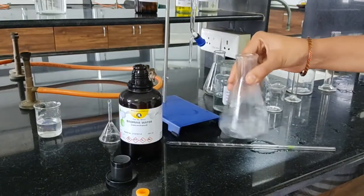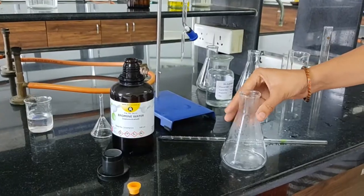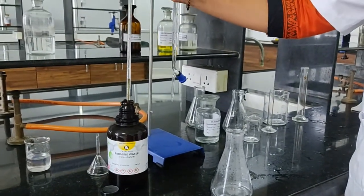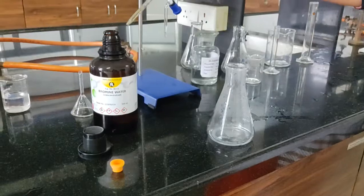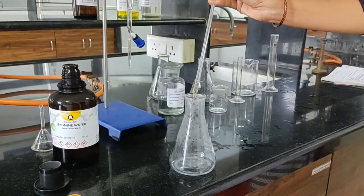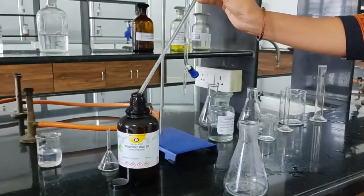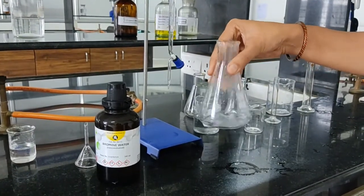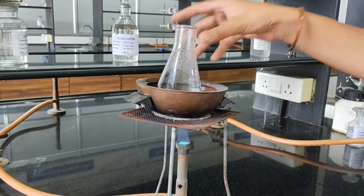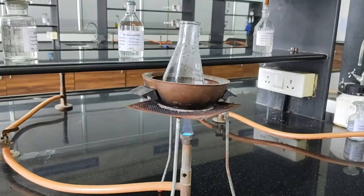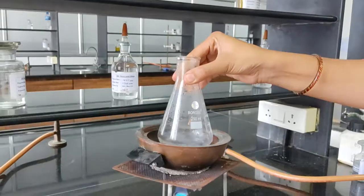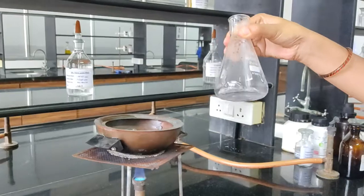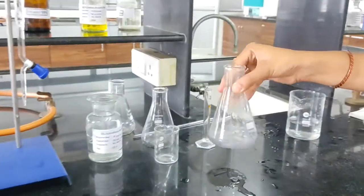Now add 0.1 ml of bromine water into the solution. After addition of bromine water, we have to heat this solution so that excess of bromine gets evolved. Heat for few minutes so that excess of bromine gets evolved. After boiling for 10 minutes, cool this solution in water bucket. Now our solution is cool.